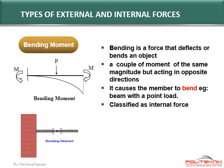Next is bending moment. Bending moment is a force that deflects or bends an object. It's also a couple of moments of the same magnitude but acting in opposite directions. It causes the member to bend. For example, a beam with a point load acting on it will cause the beam to bend. This force is classified as the internal force.